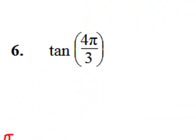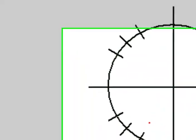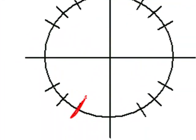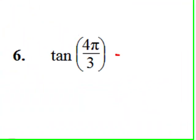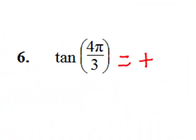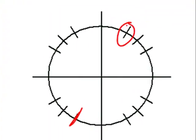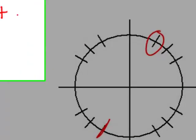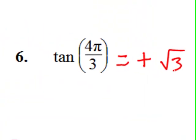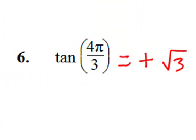Number six. Four-thirds pi is in quadrant three right there. Tangent in quadrant three is positive, so I'll write a plus sign here. And because it's divided by three, it relates to pi over three in quadrant one. And the tangent there is square root of three. So that's positive square root of three.